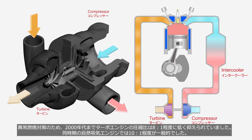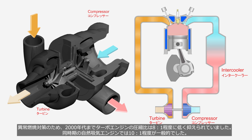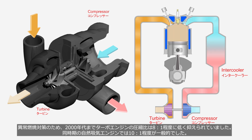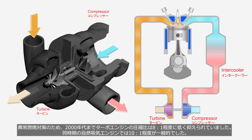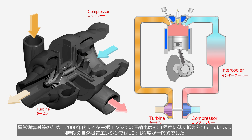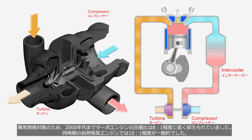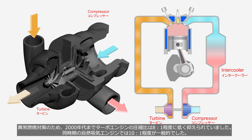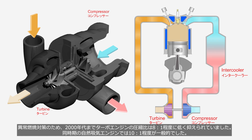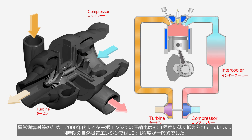Until the 2000s, to prevent abnormal combustion, the compression ratio of turbo engines was kept relatively low, around 8 to 1. During the same period, naturally aspirated engines typically had a compression ratio of around 10 to 1.